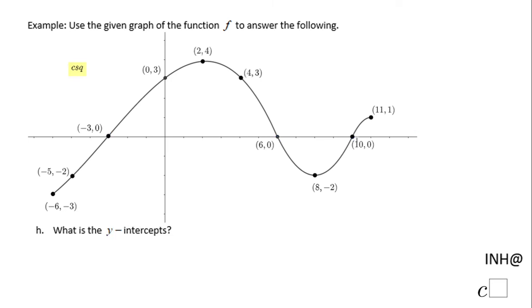Part H, what is the y-intercept? The y-intercept is the point where the graph crosses the y-axis, which is right here, and it's only 1 because it's a function. The y-intercept is 0 and 3.